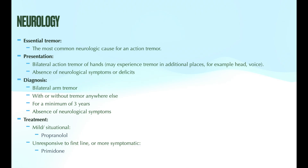Let's start the discussion talking about tremors. It's important to be able to differentiate between a rest tremor and an action tremor. A rest tremor occurs in a body part that's not being used or is at rest, and an action tremor is more common and occurs in a body part that is being currently used or in action.